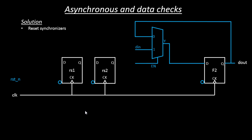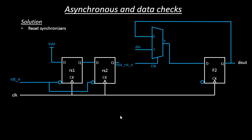Let's add the reset line to the reset synchronizer flop 1 and flop 2. The connections we need to make are: tie the D pin of the first flip-flop to logic 1 or VDD, take a connection from Q to D of flop 1 to flop 2, and take an output from Q which is called the master reset end. This master reset end is the one that will trigger and basically reset all the flip-flops in your design.